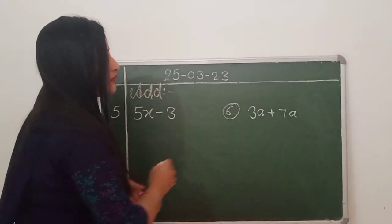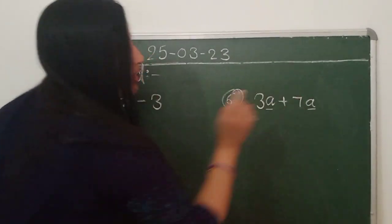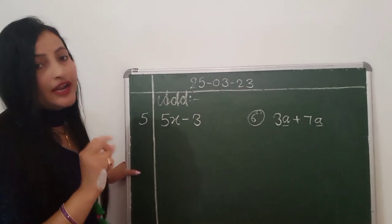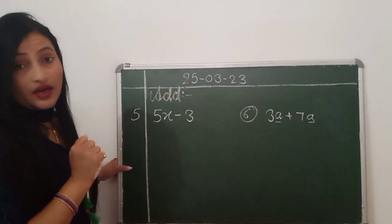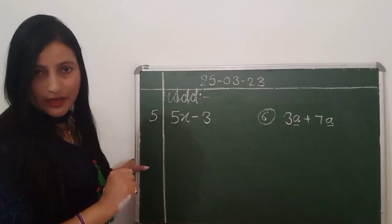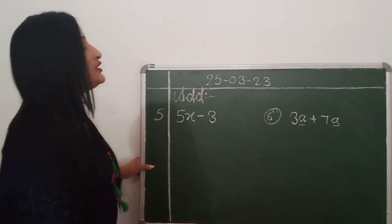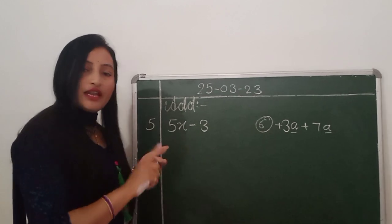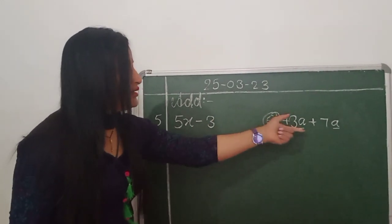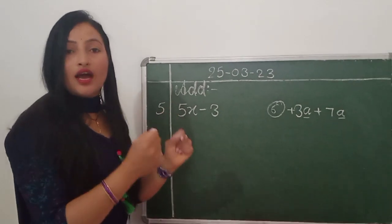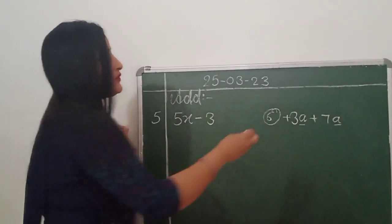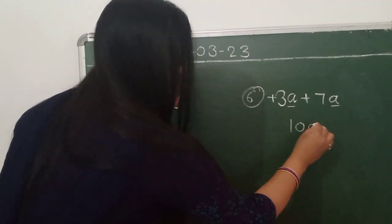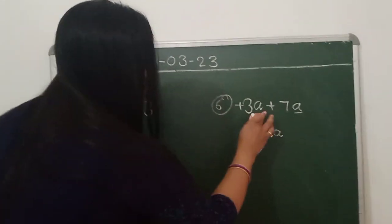Now see here — here also a and here also a. दोनों के पास a है — तो addition या subtraction होगा. देखो यहाँ पर plus की sign छिपी होती है — मैंने बताया है. So दोनों के पास plus की sign है — same sign — so we add. 7 plus 3, we write 10 and A should be there — 10a. And we write the sign of the bigger number.